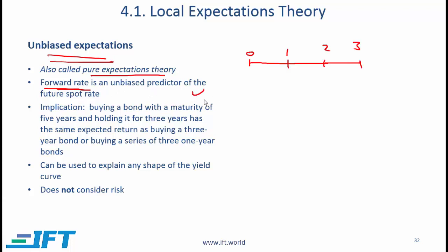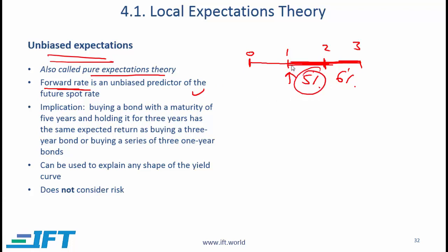To understand this statement, let's consider a simple example. Say we are at time 0, and the forward rate for this period — the one-year rate for a loan that starts one year from today — let's say that forward rate is 5%, and this other forward rate, the one-year rate for a loan that starts two years from today, is 6%. According to the pure expectations theory, 5% is the expected spot rate after one year.